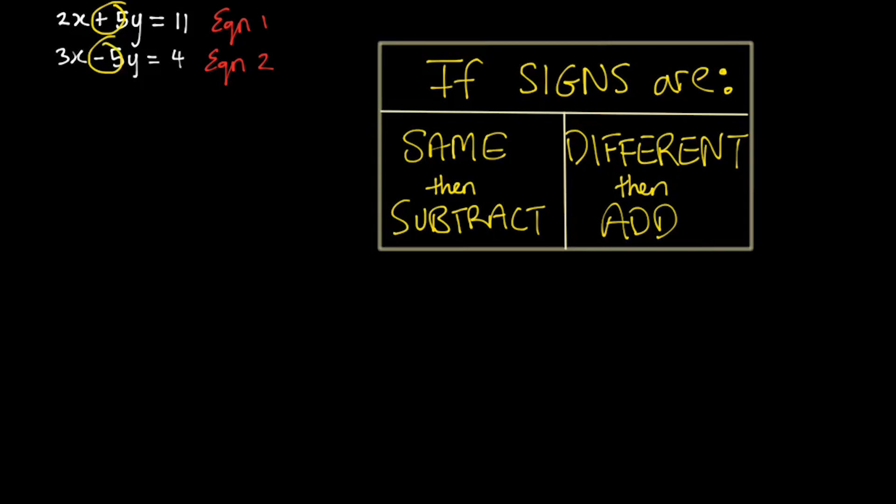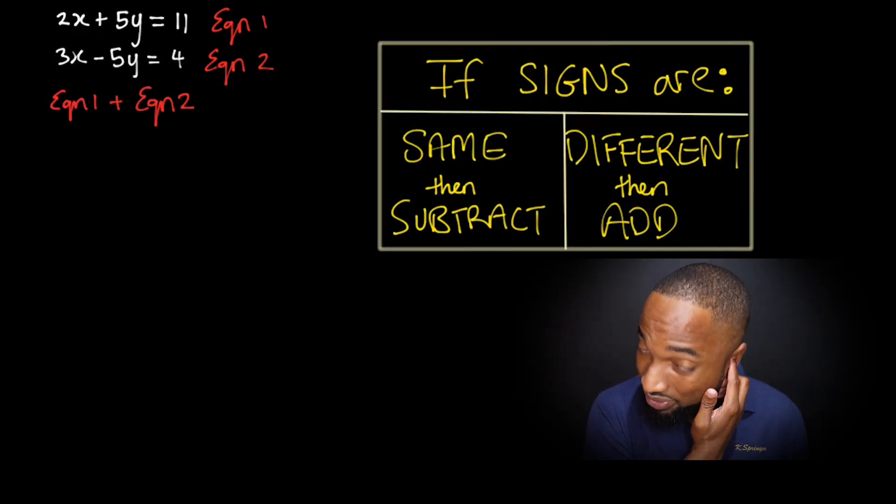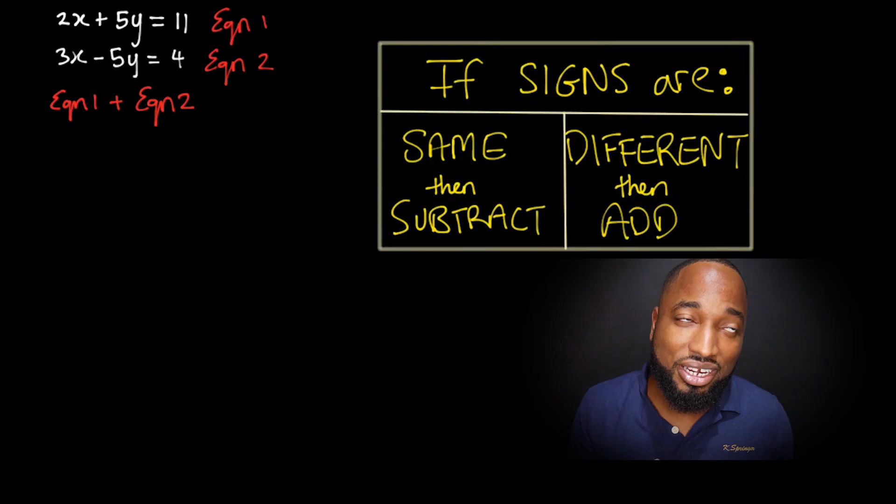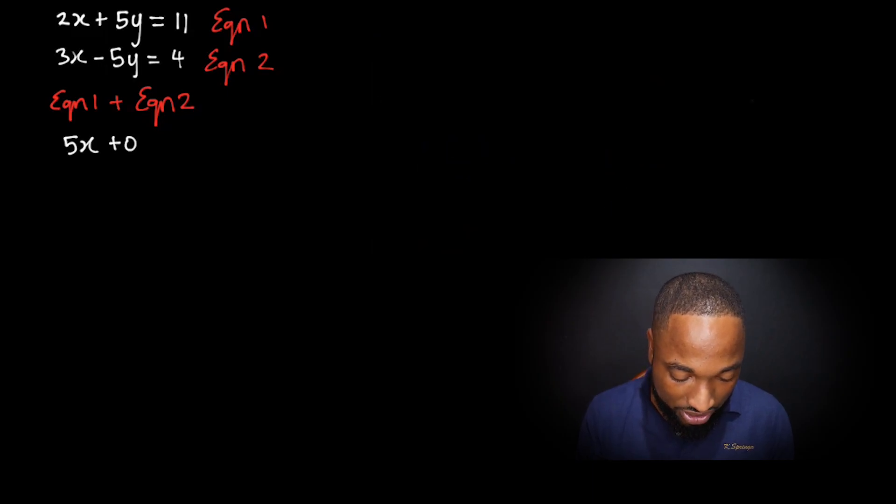What we're going to do here is look at the signs in front of the numbers that are the same—it's positive and negative. If these signs are different then we need to add equation 1 and equation 2. Everything you're doing, you should state it—call it out and then do it. So we add the two equations together.